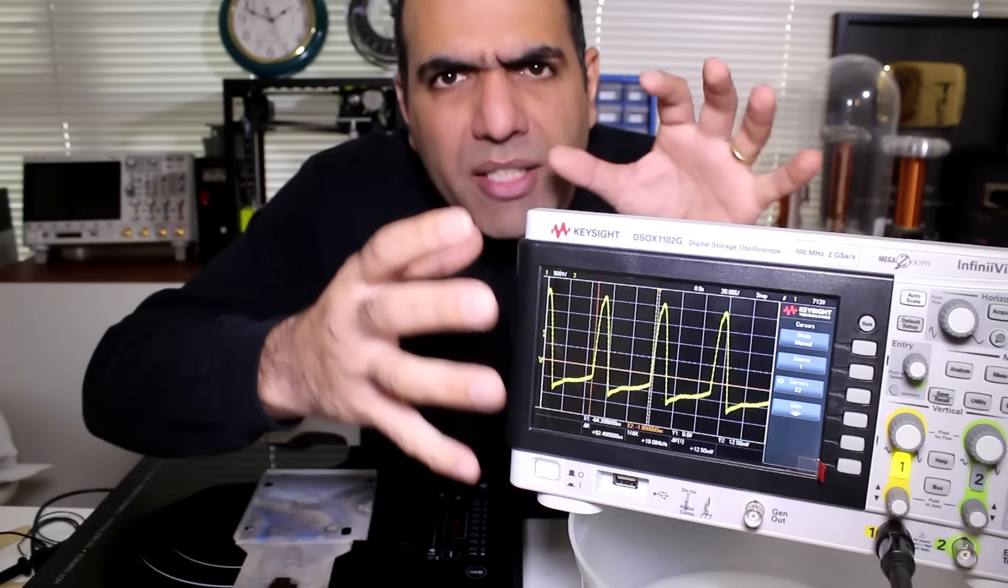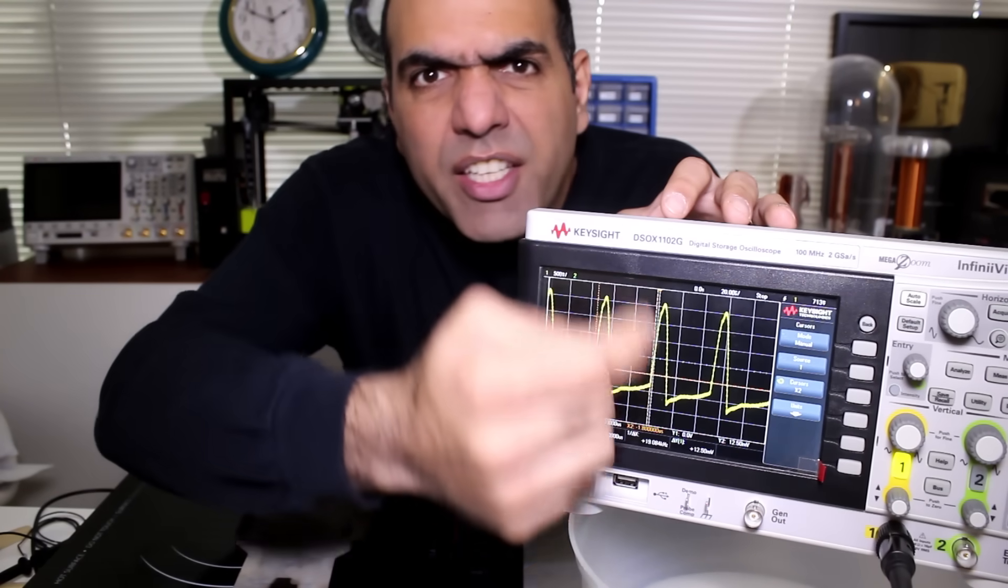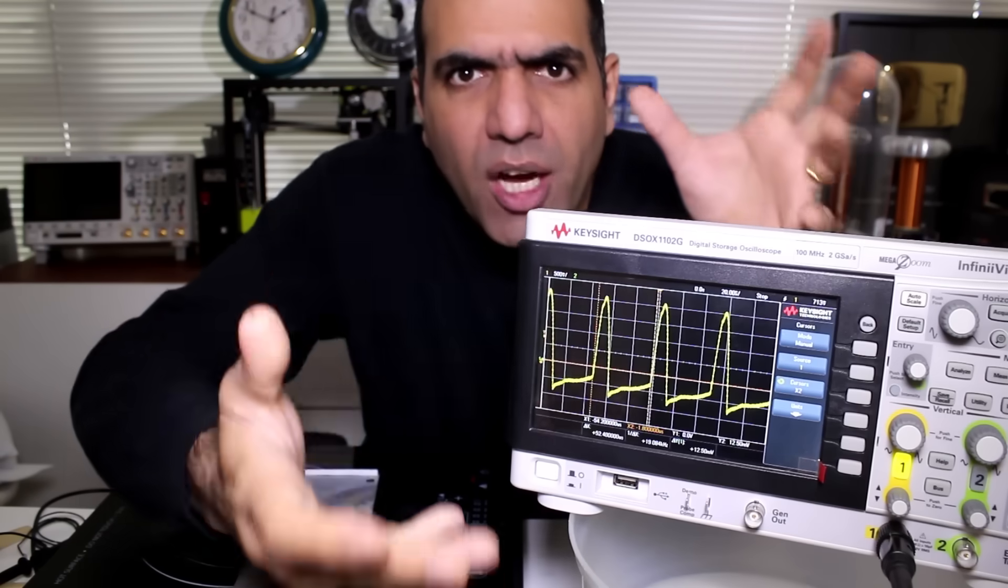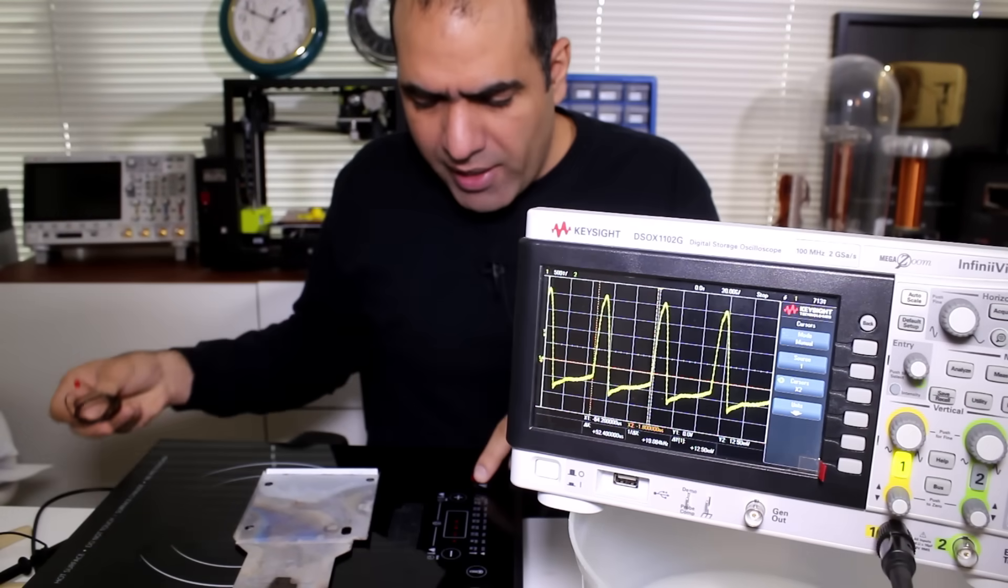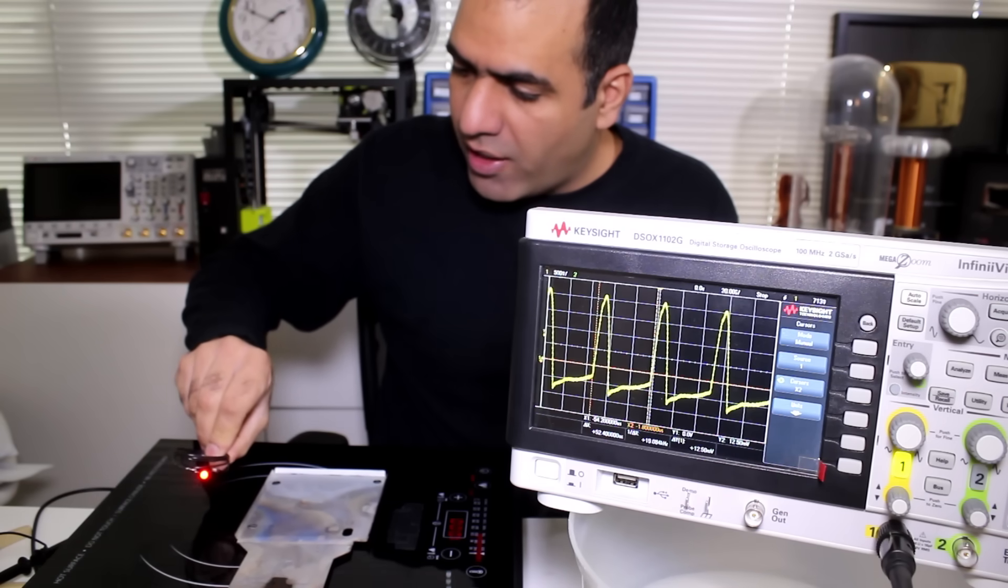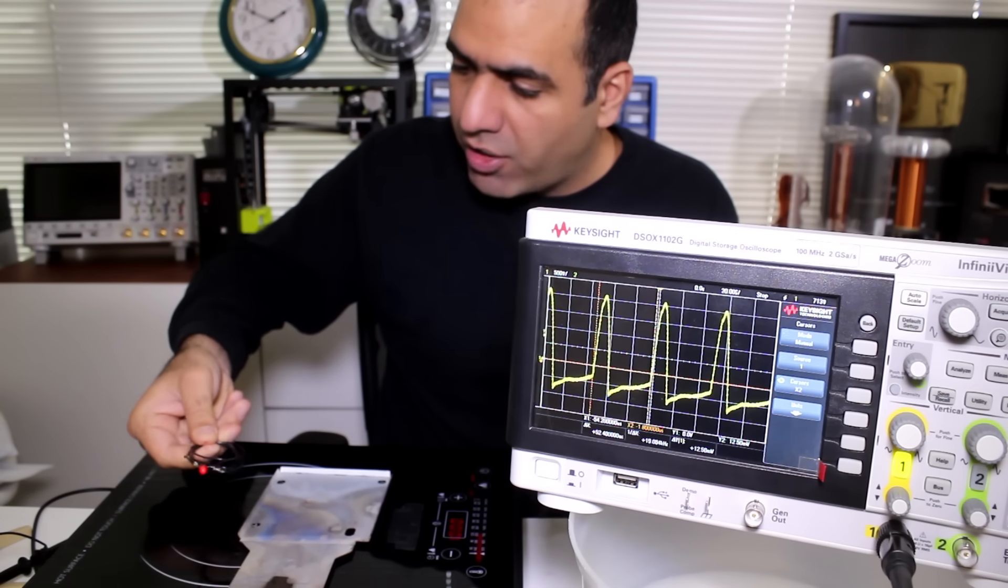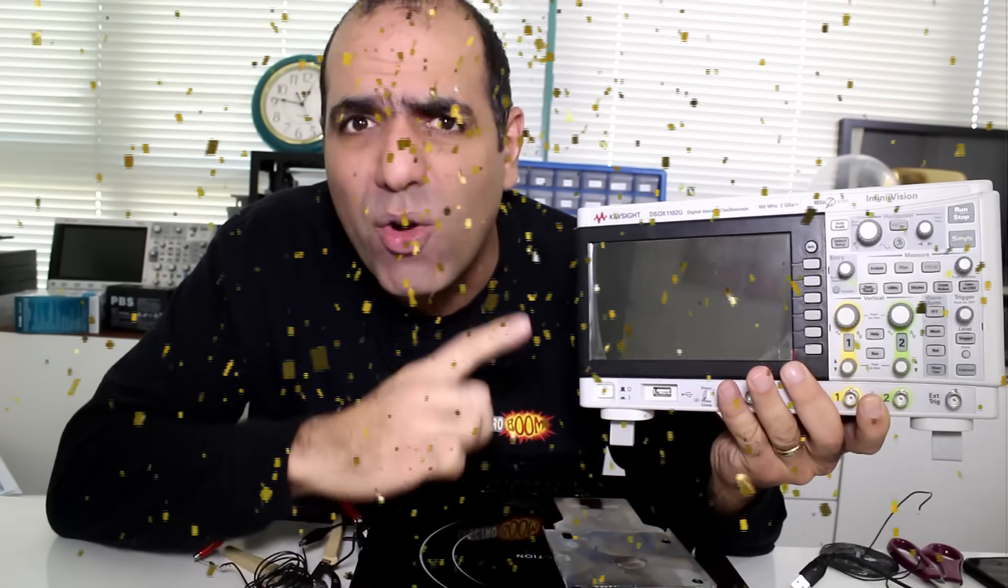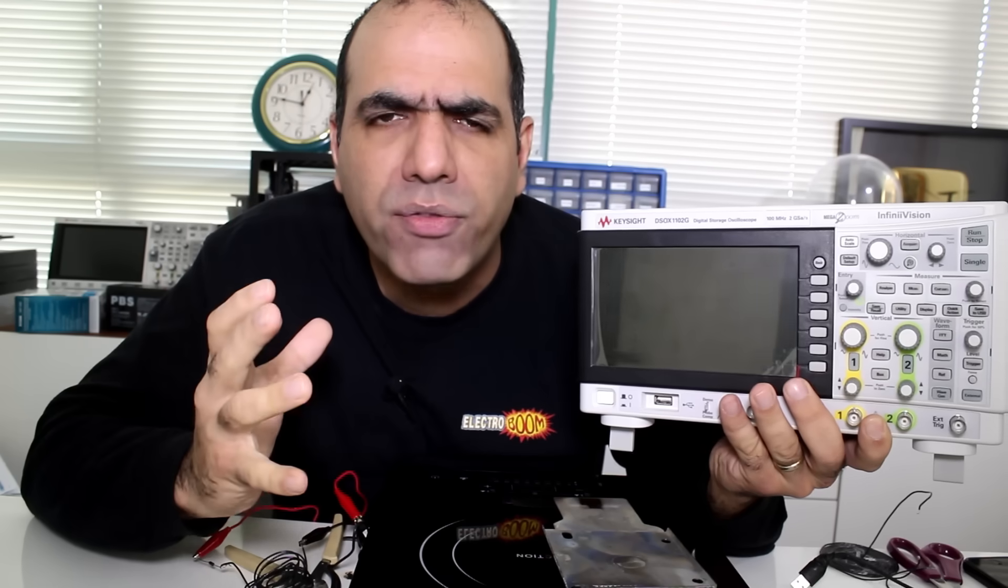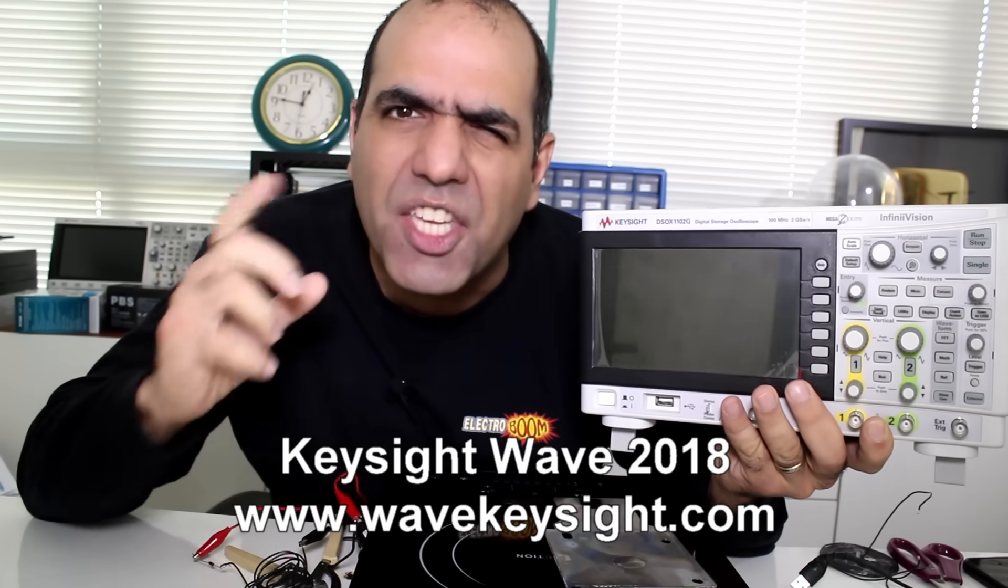Anyways, the asymmetrical waveform results in a higher positive voltage on one side and smaller negative voltage on the other side. And that's why my LED works in the direction that gives a larger positive voltage across it. And yes, I'll give away two more of these great Keysight scopes at the end of the video. Also, search for Keysight wave 2018.